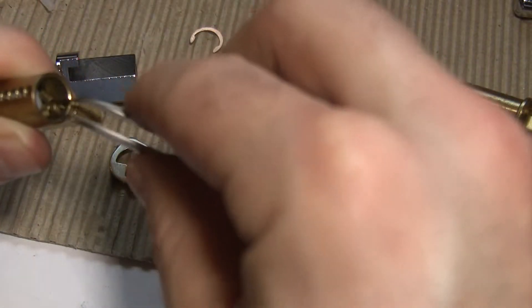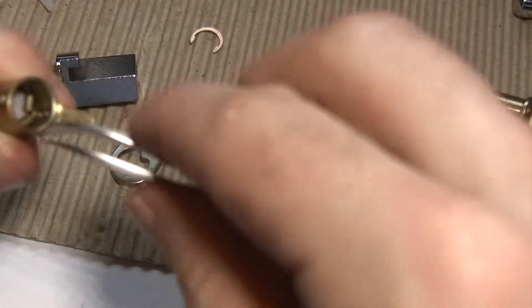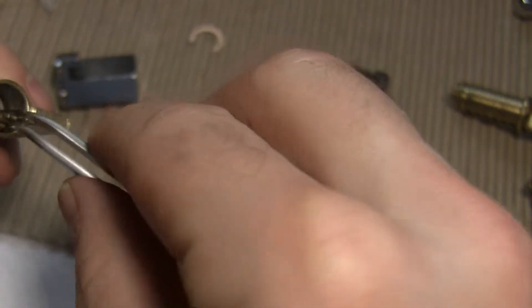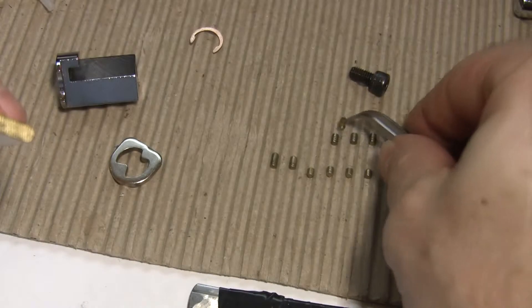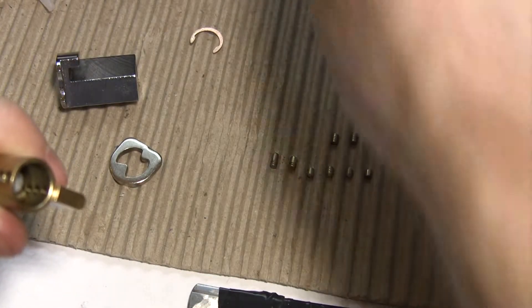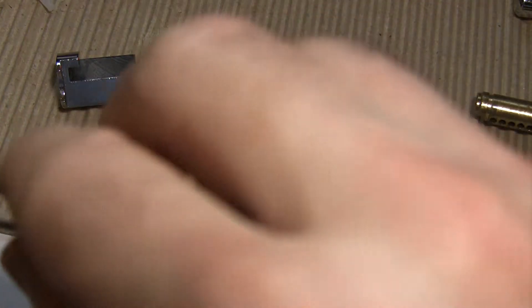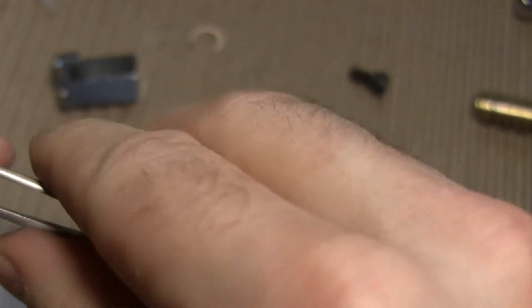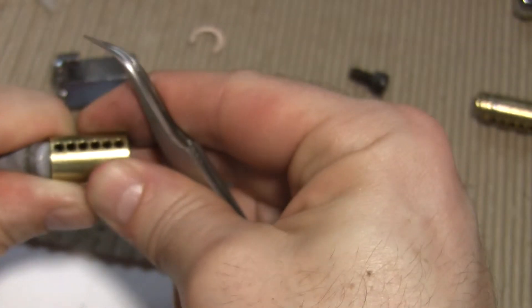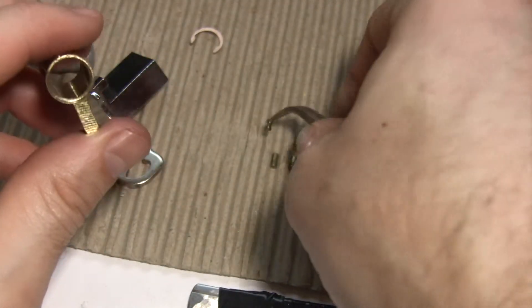Alright, so number one is serrated, number two is serrated, pin three is serrated. Actually pin three was a serrated spool. This must have been pin four. Pin five is serrated, and pin six is a serrated spool.